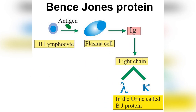Unlike normal plasma cells, where the production of light chains and heavy chains are tightly balanced, neoplastic plasma cells often synthesize an excess of either light or heavy chains. Free light chains are small enough to be excreted in the urine, where they can be detected, and are called Bence-Jones proteins.